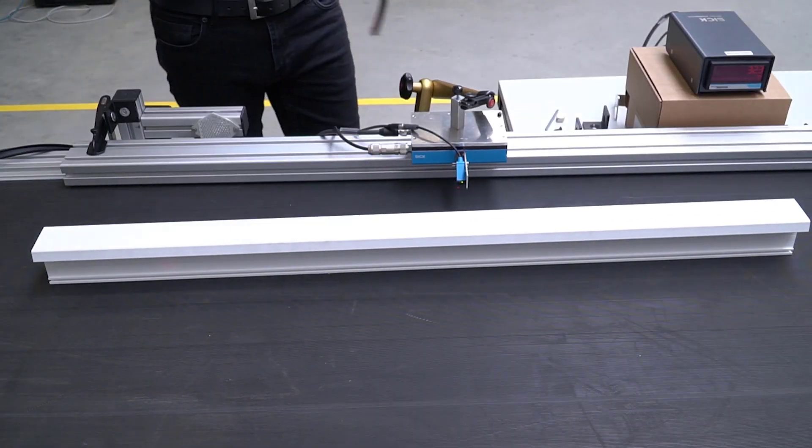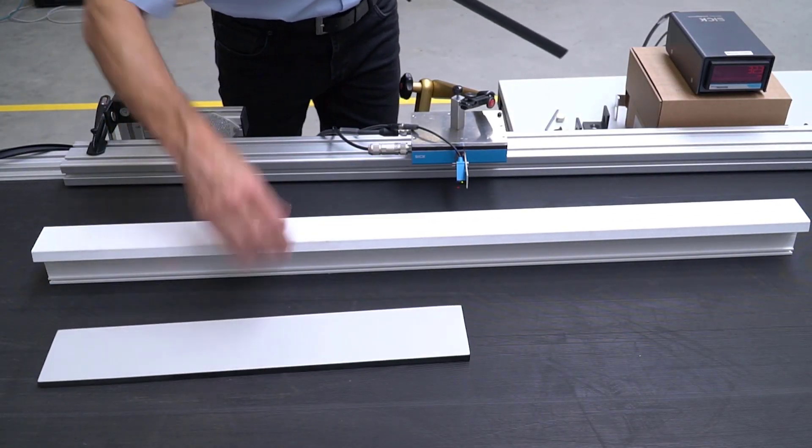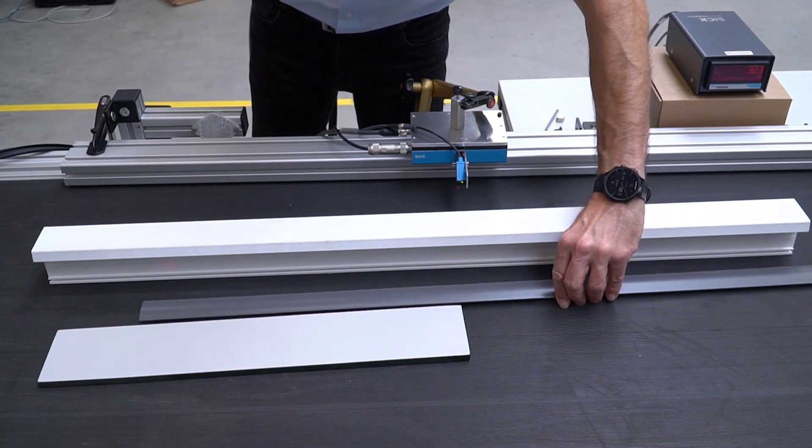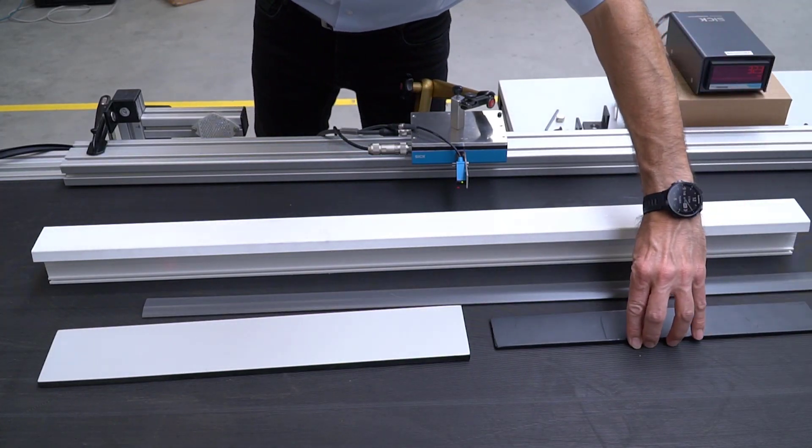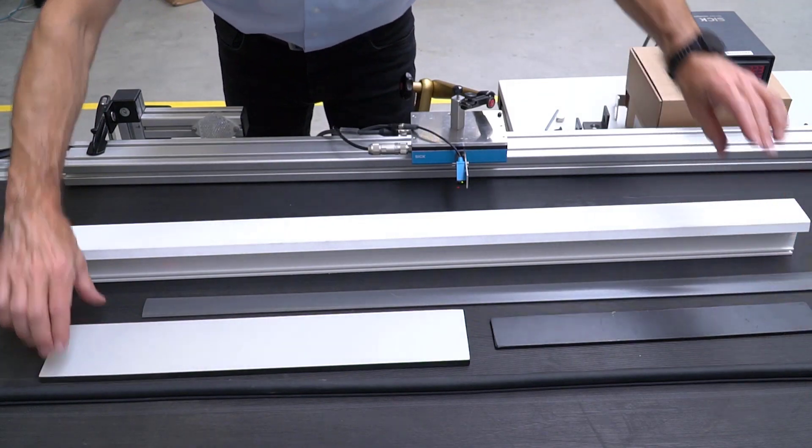If you extrude or process plastic sections, boards, trim or tubes, you probably need to cut these to length or synchronize the speed of the material during the production process.